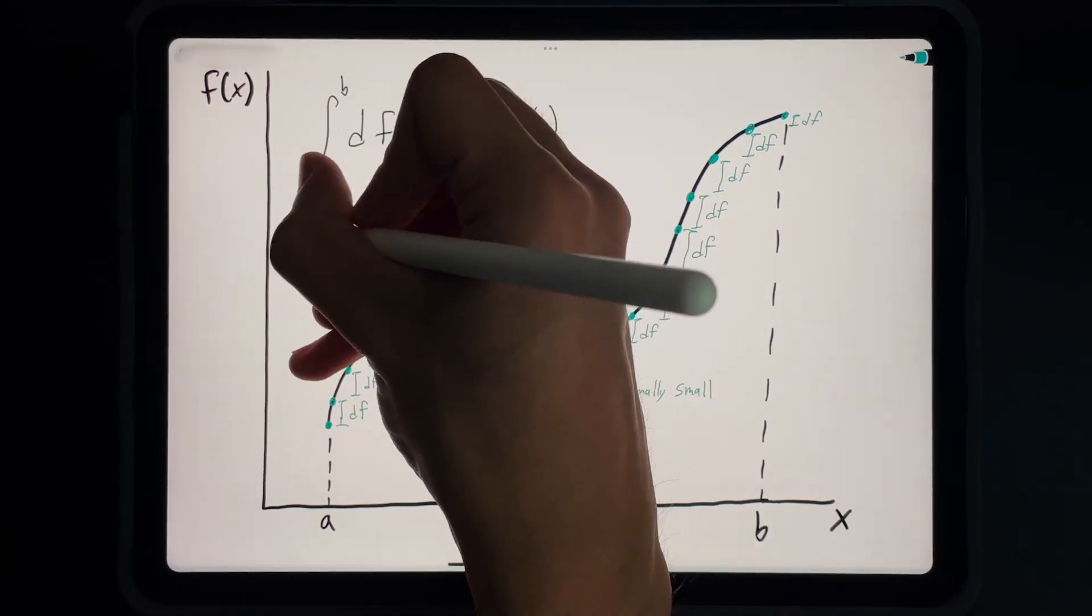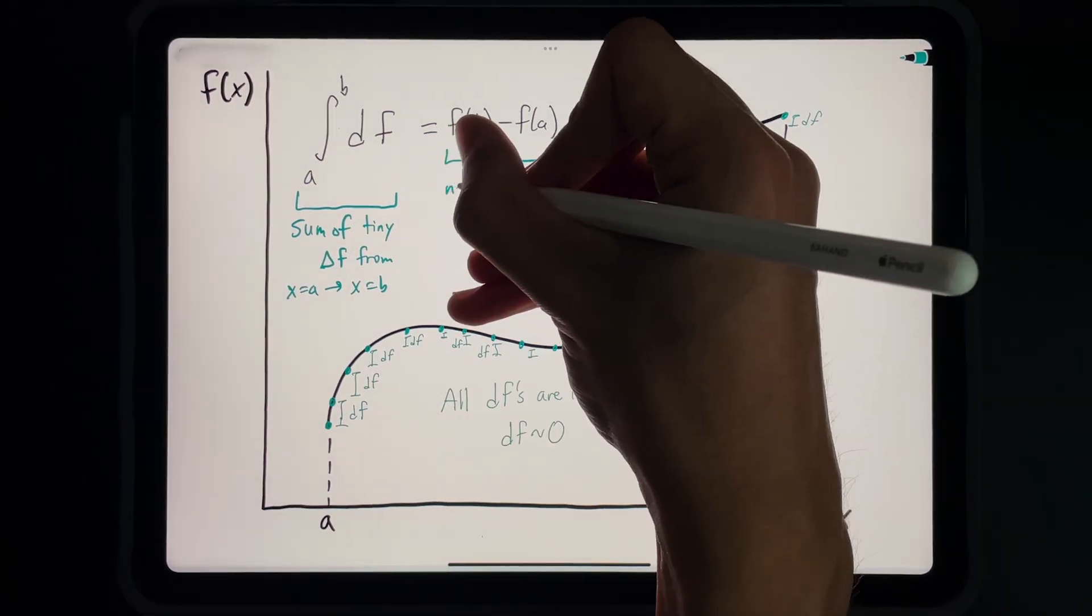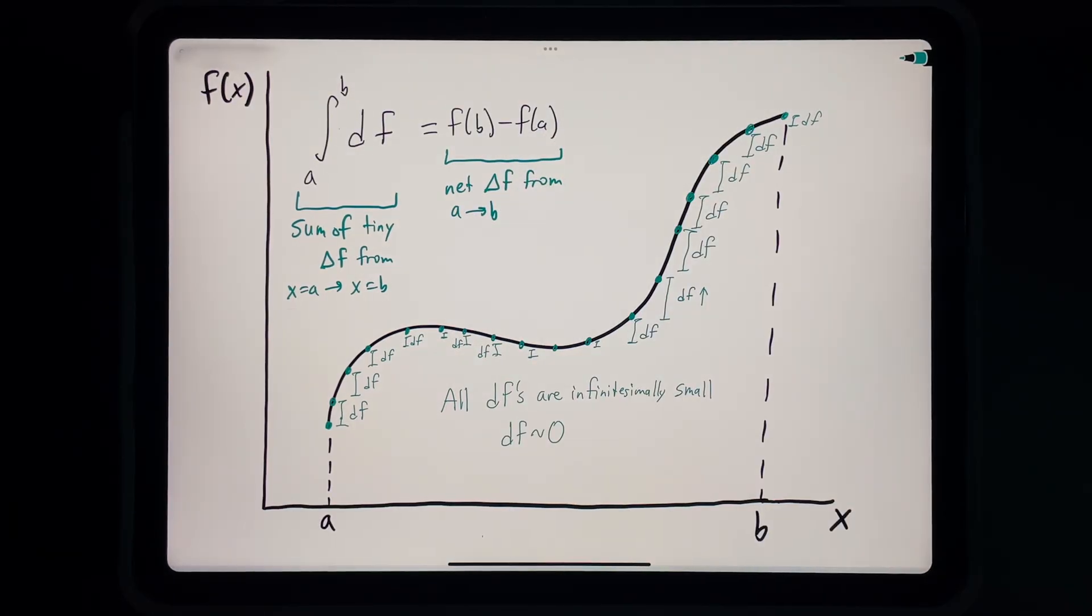The sum of these tiny changes in f from a to b is just the total change of f from a to b. And so we can see that the integral of df from a to b is the same as the difference between the value of the function at b and its value at a.